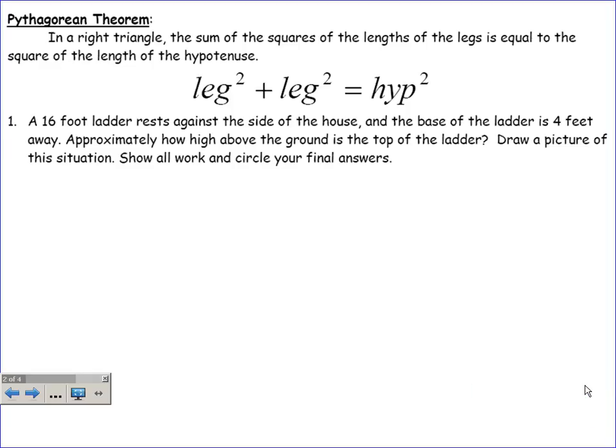The very first problem is a story problem. Silas, could you read this out loud? A 16-foot ladder rests against the side of a house, and the base of the ladder is 4 feet away. Approximately how high above the ground is the top of the ladder? Draw a picture of the situation, show our work, and circle it.